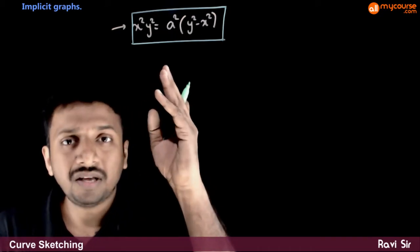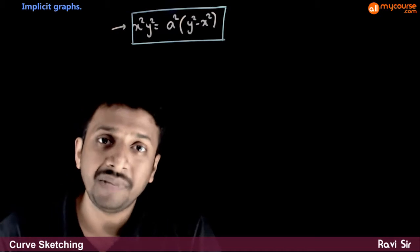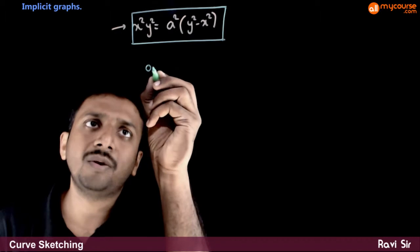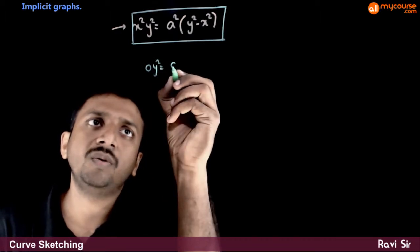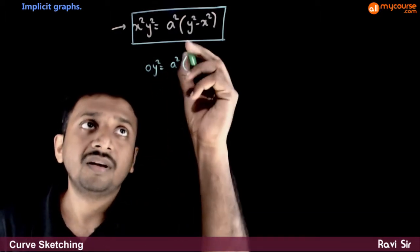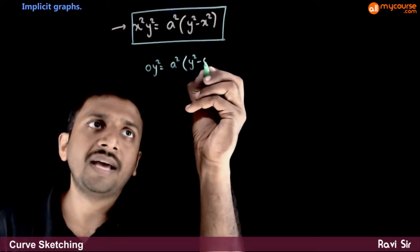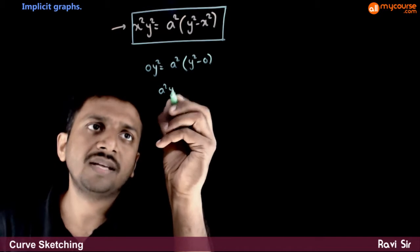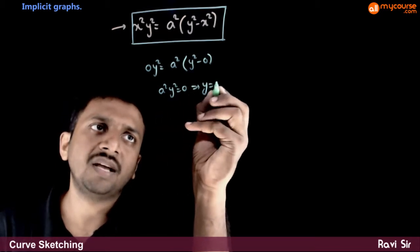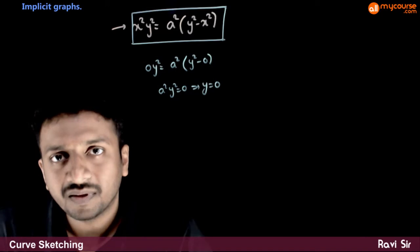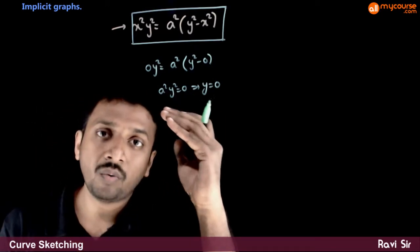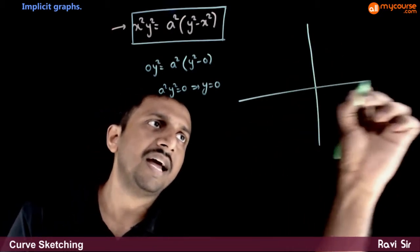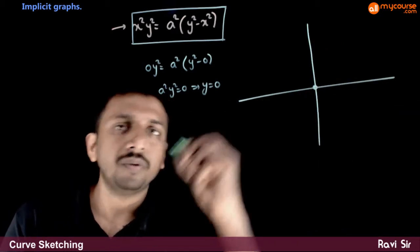First, let us try to see where this curve meets the axes. If you put x = 0, you get 0·y² = a²(y² - 0), so a²y² = 0, which implies y = 0. That means when x = 0, y is also equal to 0 — the graph passes through the origin.